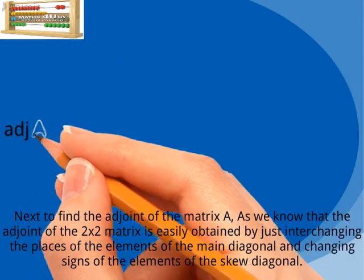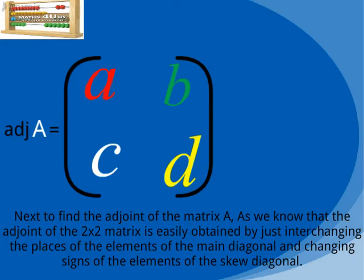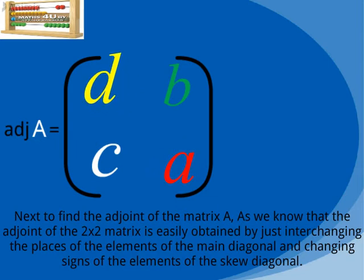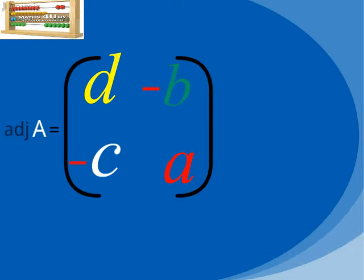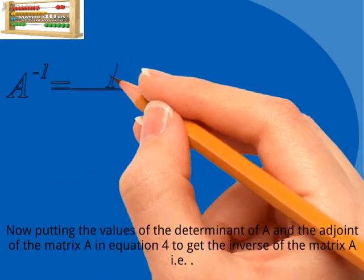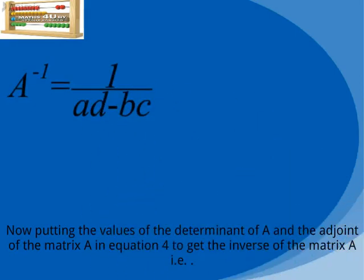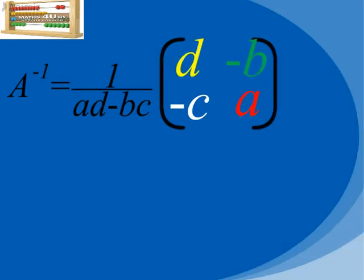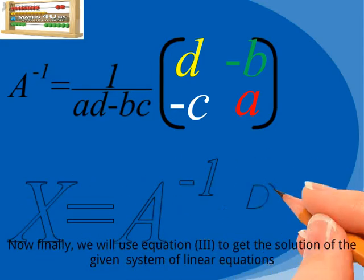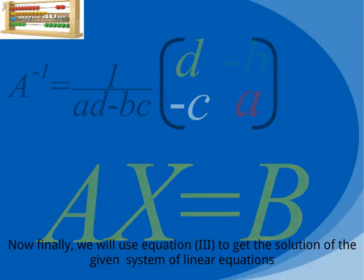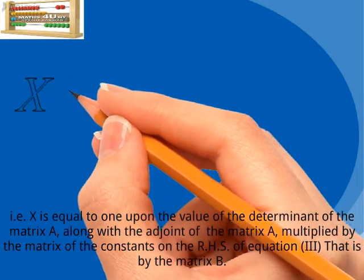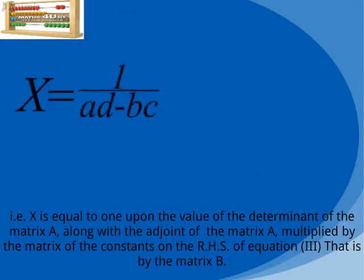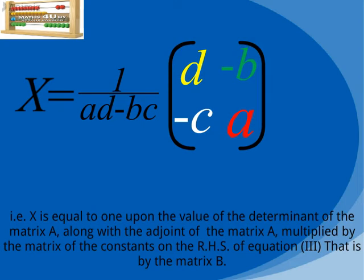Next, to find the adjoint of the matrix A: the adjoint of a 2×2 matrix is obtained by interchanging the places of the elements of the main diagonal and changing the signs of the elements of the skewed diagonal. Putting the values of the determinant of A and the adjoint of A into the formula gives us the inverse of matrix A. Finally, we use equation 3 to get the solution: X equals 1 over the determinant of A, times the adjoint of A, multiplied by the matrix of constants B.